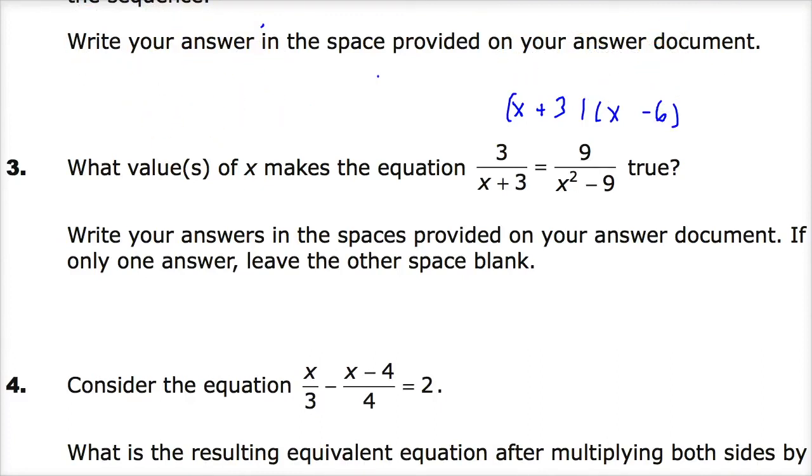Now what do I do? I'm going to solve, I'm going to use the zero product property. x plus 3 equals 0, minus three minus three. I'm assuming at this point you don't need me to show you that because you're smart folks. x minus 6 equals 0, plus six plus six.